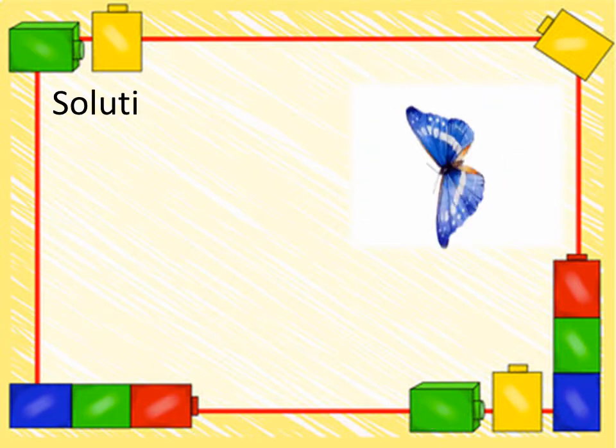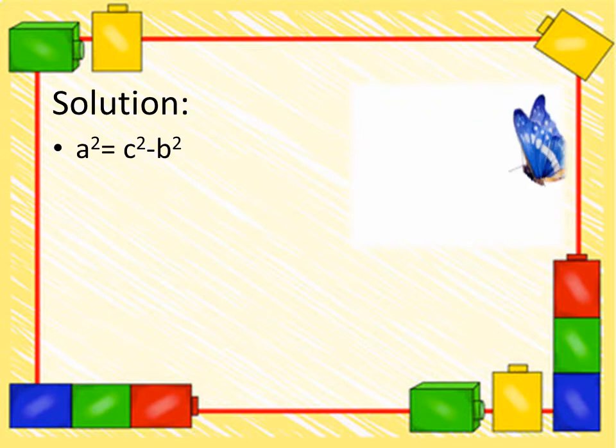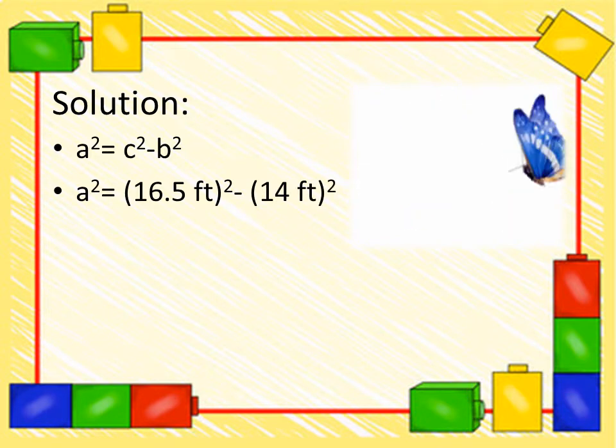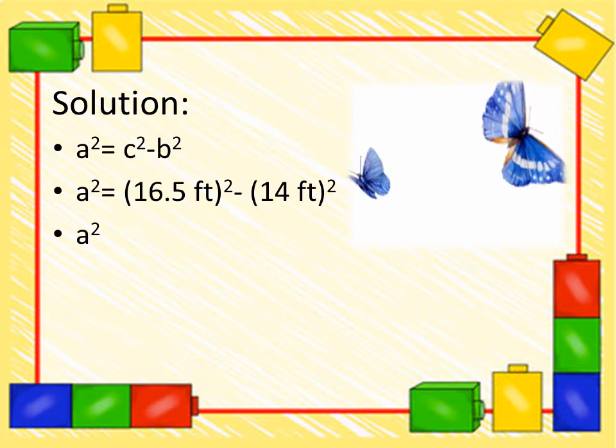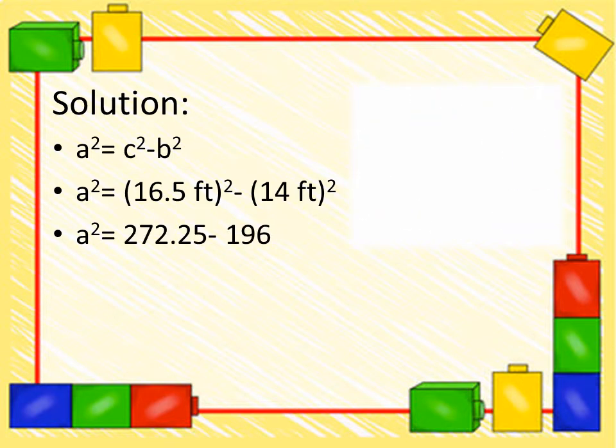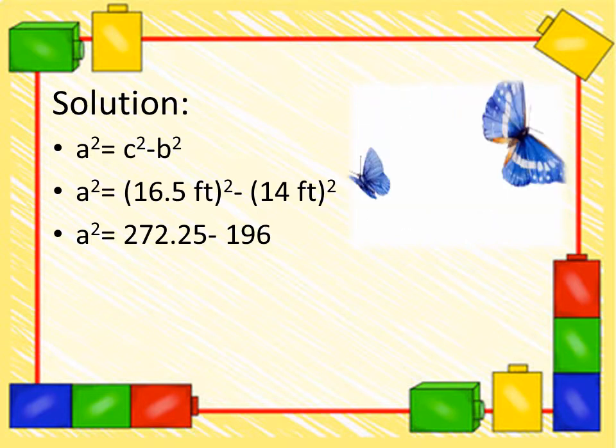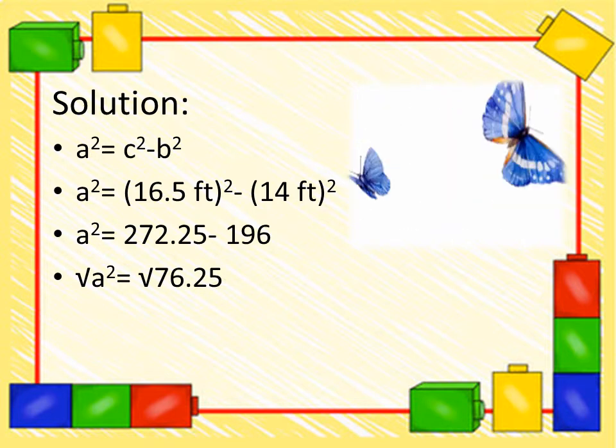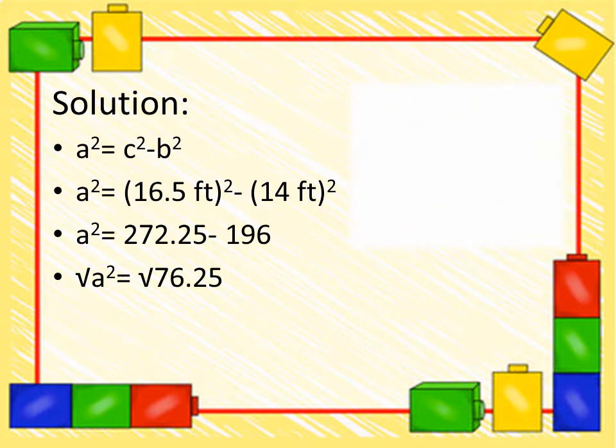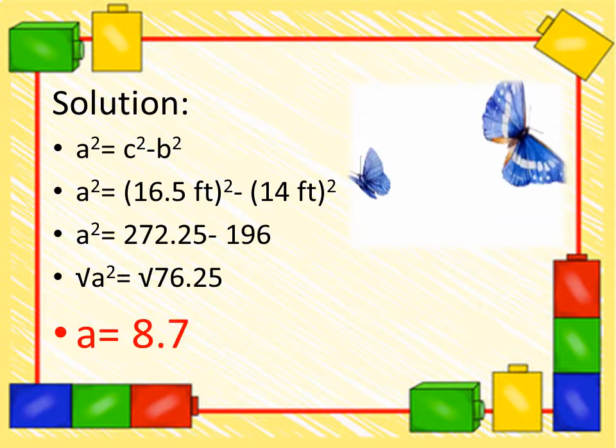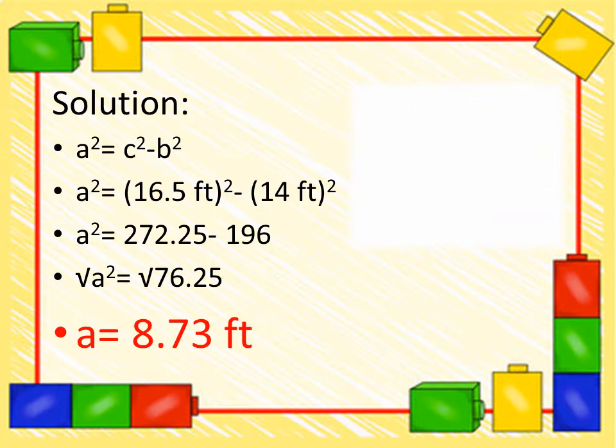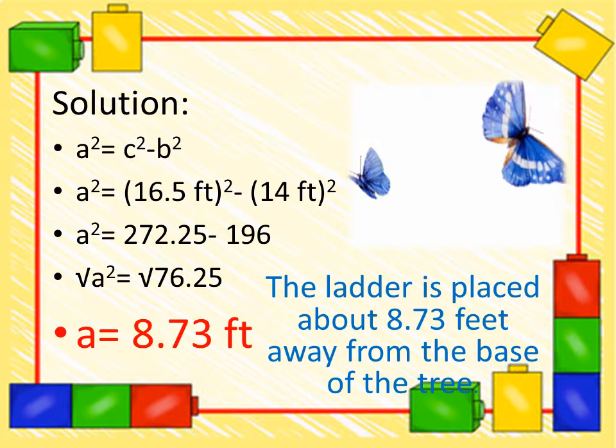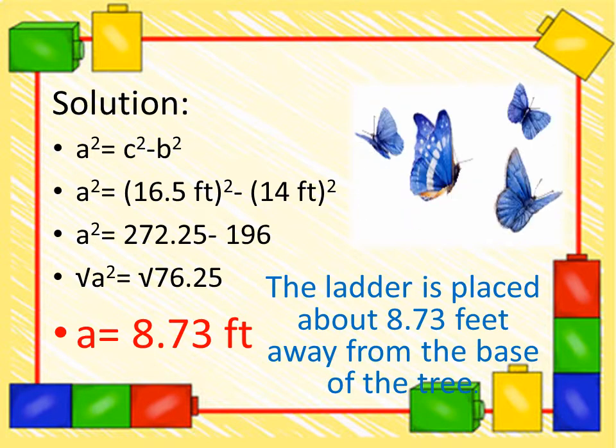Here is the solution of the problem. a² = c² - b². a² = 16.5 ft² - 14 ft². a² = 272.25 - 196. So, we are going to square root a² and then 76.25. The answer is a = 8.73 feet. The ladder is placed about 8.73 feet away from the base of the tree. That is the answer.